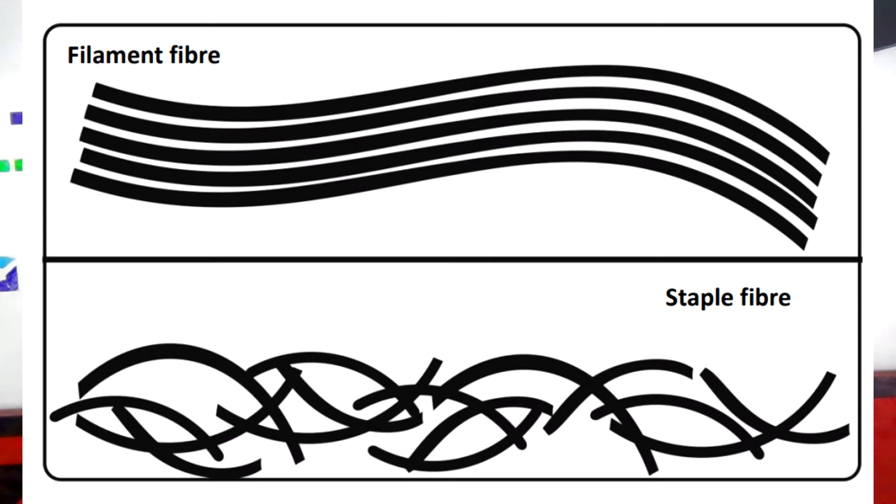In today's video I'll be only talking about natural fibers, and in my next video I will discuss man-made fibers. Fibers can take two different types of forms: staple fibers, which are short fibers and usually natural, and filament fibers, which are long continuous fibers and usually man-made — with the exception of silk, which is the only natural filament fiber.